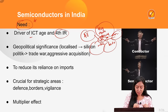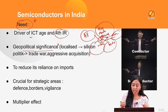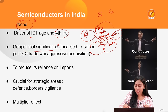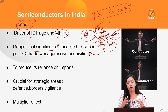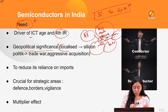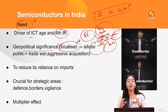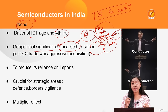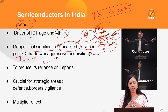Second, there is immense geopolitical significance associated with semiconductors. Semiconductors are made from silicon, germanium, and compounds like gallium arsenide. Since inputs and manufacturing facilities are not uniformly distributed worldwide, it is a highly localized industry. Whoever holds dominance in semiconductor inputs, processing, and products will eventually hold dominance over global politics — a situation also known as 'silicon politics' — leading to trade wars and aggressive acquisitions.